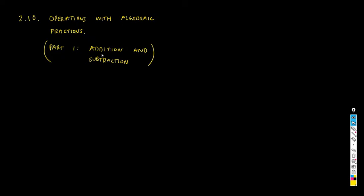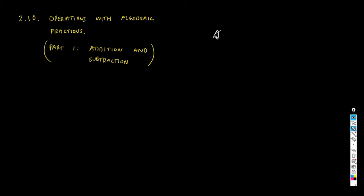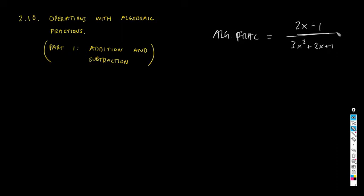Today we're going to add and subtract algebraic fractions — that's the goal. Let me remind you that an algebraic fraction is something of the type, for example, (2x − 1) over (3x² + 2x + 1). It's when we have a polynomial over another polynomial. That's an algebraic fraction.